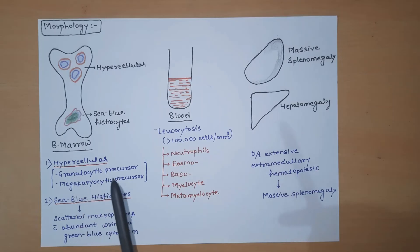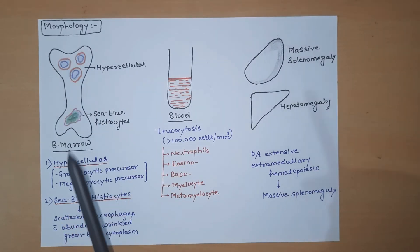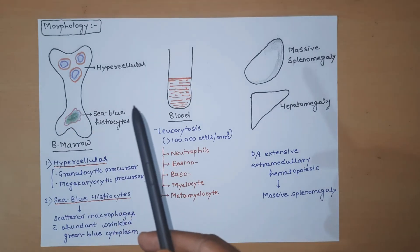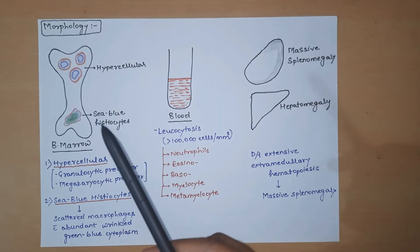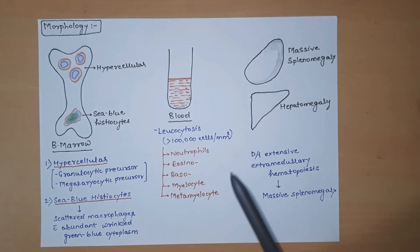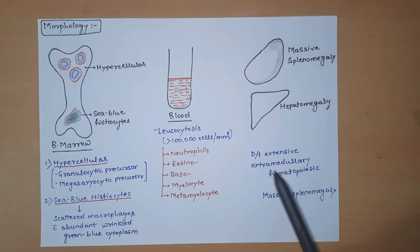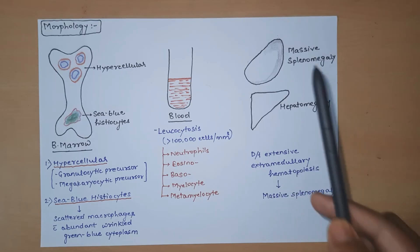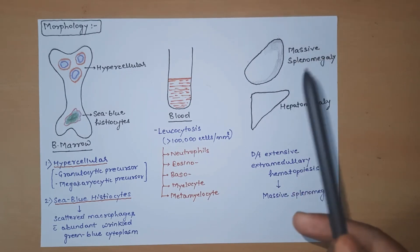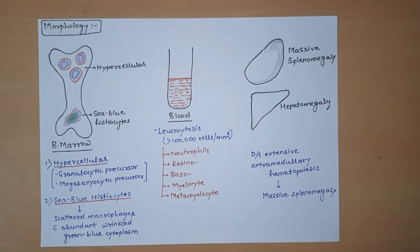When the bone marrow is filled with these precursors, normal hematopoiesis cannot be carried out optimally. As a result, there is a need for extramedullary hematopoiesis. When this need is very extensive and extramedullary hematopoiesis occurs from the spleen, the spleen size increases, leading to massive splenomegaly in patients of CML.